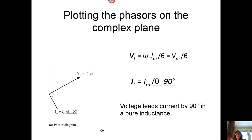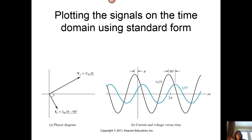If we plot these phasors on a complex plane, since we're dealing with an inductor, we know based on ELI that our voltage must lead the current by 90 degrees. And if we plot those, we see that — notice the voltage leads the current by 90 degrees. We see the peak of the voltage is 90 degrees in front of the peak of the current.